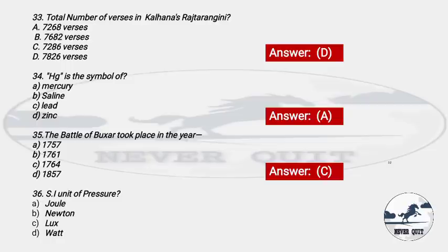Question 35/36: What is the SI unit of pressure? Options: A) Joule, B) Newton, C) Lux, D) Watt. The right answer is option B — Newton. The unit of pressure is Newton.